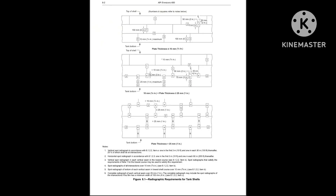Regarding the thickness of the shell, we have to decide how many spots we have to do for spot radiography. It is mentioned in the drawing. There are three thickness ranges: the first is less than or equal to 10 mm; the second is greater than 10 mm but less than 25 mm; and the third is greater than 25 mm shell course thickness. As per the thickness range, we have to select the spot radiography requirements.